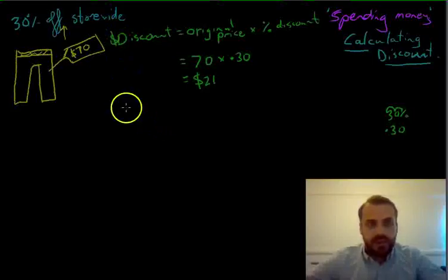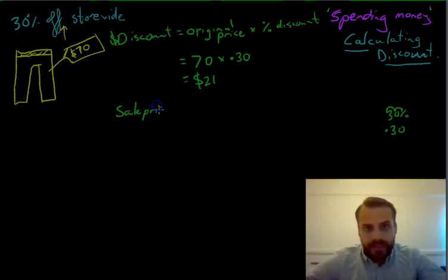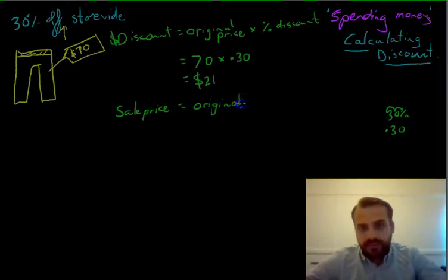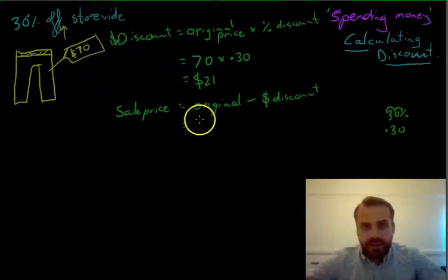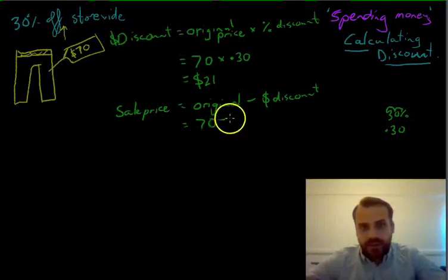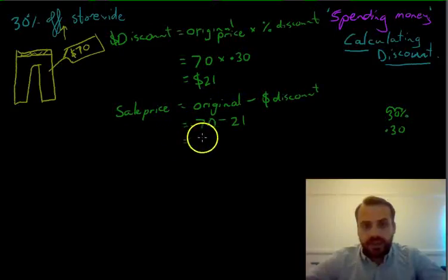So we can use a second formula here, and that is the sale price, that is the amount that you'll actually pay for the pants, is equal to the original price minus the dollar discount. Okay, so the original price in this case was $70. The dollar discount was equal to $21. And you can type that into your calculator, and you'll get $49.